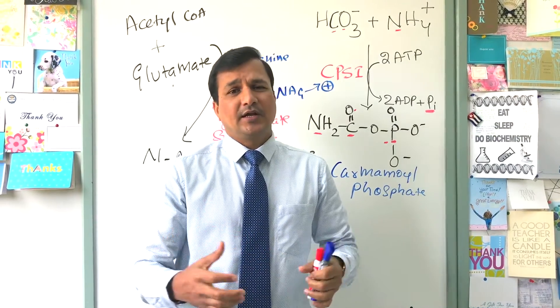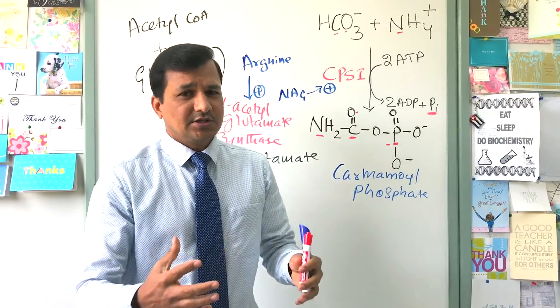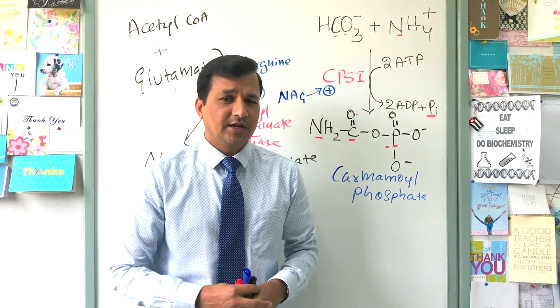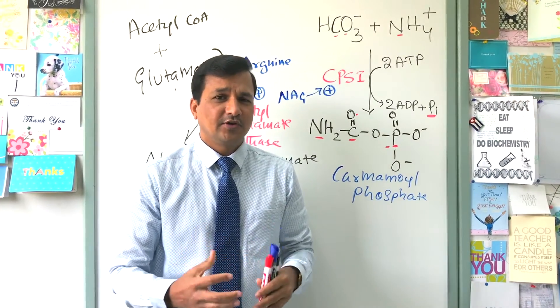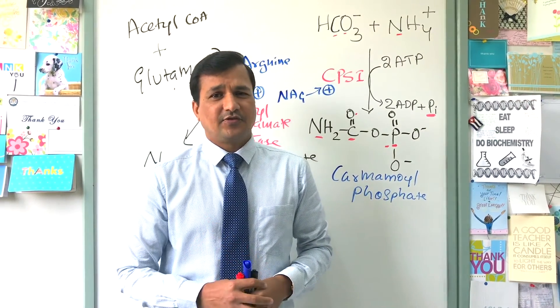Thereby, urea cycle enzymes can be induced, urea can be synthesized in the liver, secreted, filtered by the kidney, and appear in the urine. This is what regulation of the urea cycle is all about. Thanks for watching.